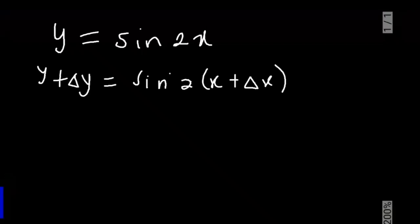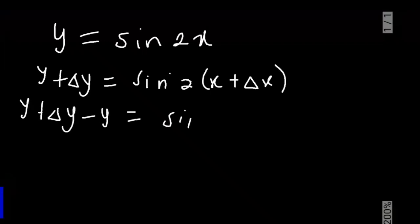So from here, to get rid of this y, we have to subtract y from both sides. So we have: y plus change in y minus y equals sin(2x plus change in x) minus y.